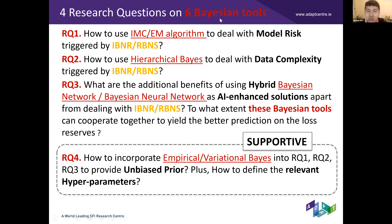My six research questions are: (1) how to use Bayesian tools to deal with model risk; (2) how to use Bayesian tools to deal with data complexity; (3) what additional benefits the hybrid Bayesian approach offers as a solution; (4) to what extent Bayesian tools can cooperate to yield better loss reserve prediction; and (5) a supportive research question focused on developing an unbiased prior, which is required for all experiments to produce proper outcomes. The relevant hyperparameters are also a research point.